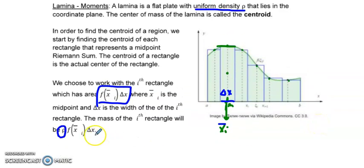So I know now that this rectangle, this ith rectangle, is going to have a mass of rho times the area of the rectangle. The area of the rectangle will be driven by the midpoint height and the width of the rectangle.